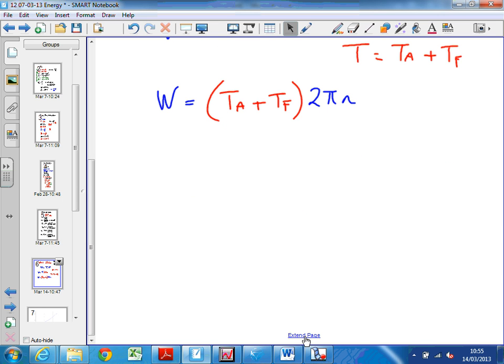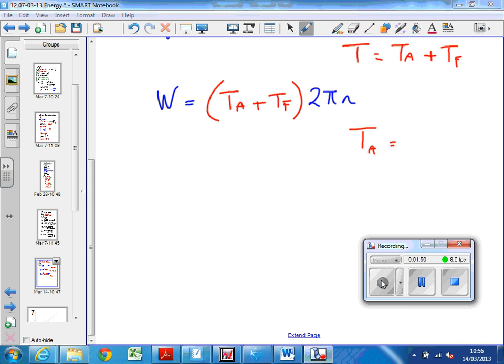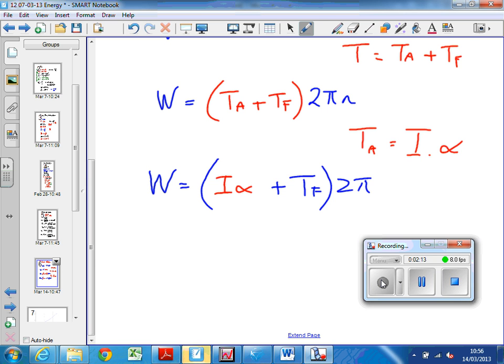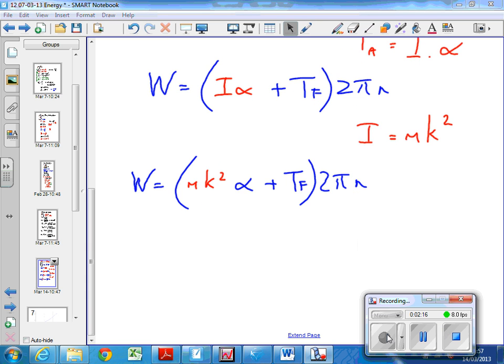So the applied torque is the moment of inertia times alpha, which is the angular acceleration. So I can put that in instead of the applied torque. So the work done equals I alpha plus the friction torque times 2 pi n. So the moment of inertia I equals mk squared. So I can substitute that in instead of the I in this function.